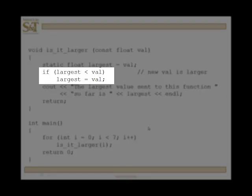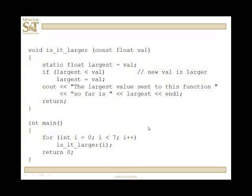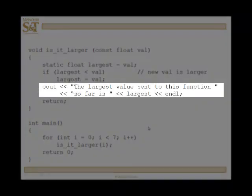That means that we're going to hold on to the largest value that is sent to this function. Each time that's going to be updated if the new argument sent is the largest. And the output statement would simply say the largest value sent to this function so far is, and then largest.